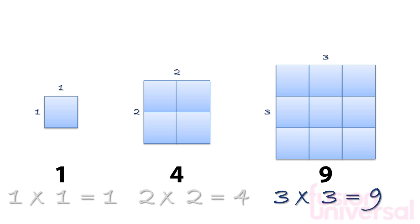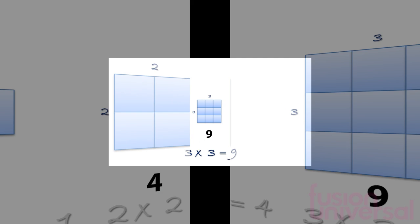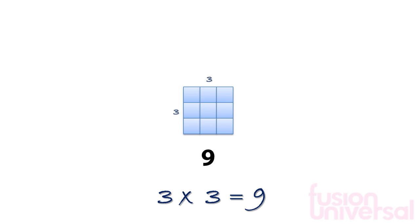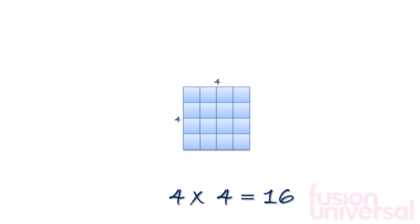Any positive integer multiplied by itself is called a square number. So the next shape in our pattern has four rows and four columns and 4 times 4 is equal to 16. So 16 is the next square number.